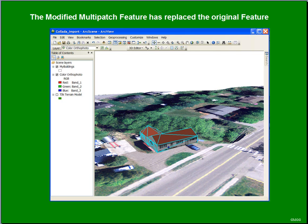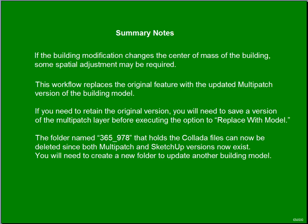A few things to note. If the building modification significantly changes the center of mass of the building, some spatial adjustment may be required in the X, Y, and Z directions. The workflow replaces the updated multipatch building model. If you need to retain the original version of this building model, you need to save a version of the multipatch layer before executing the Replace With Model option. Finally, the folder 365978 was just a temporary holding spot for our Collada files back and forth, so now you can delete it and start fresh with a new one.